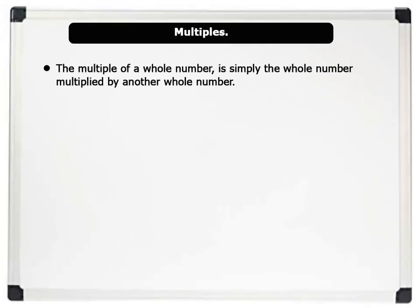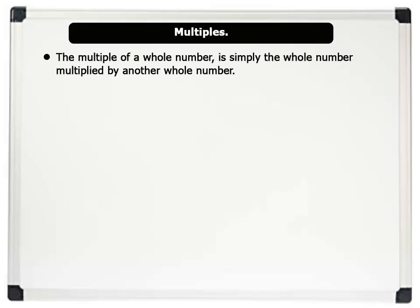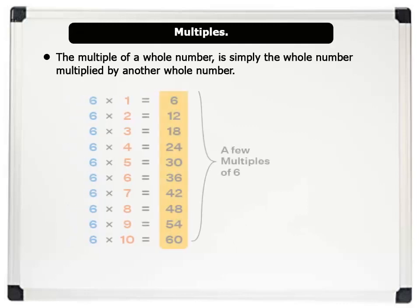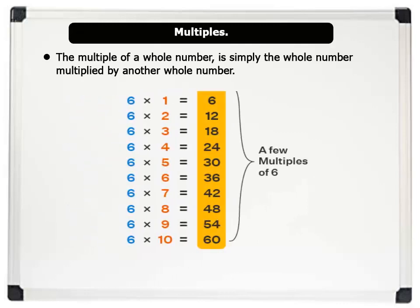The multiple of a whole number is simply the whole number multiplied by another whole number. For example, the image on the board shows the number 6 and its multiples. All the numbers in the yellow column are the first 10 multiples of the number 6.